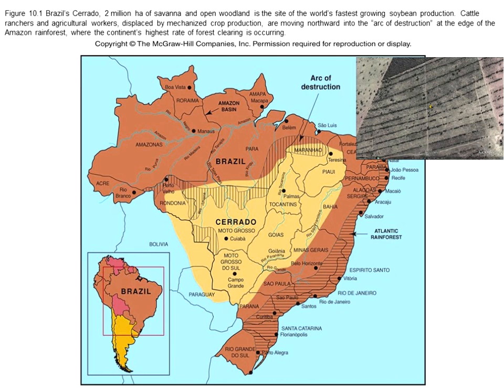With two crops per year, cheap land, low labor costs, favorable tax rates, and yields per hectare equal to those in the American Midwest, Brazilian farmers can produce soybeans for less than half the cost in America. Agricultural economists predict that by 2020, the global soy crop will double the current 160 million metric tons per year, and that South America could be responsible for most of that growth.